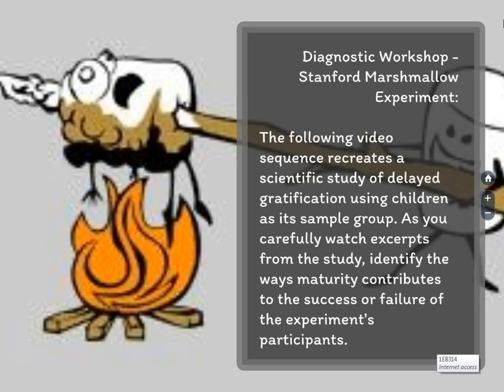Let's take a look at an illustration of that — and probably the best is the Stanford Marshmallow Experiment. In this landmark study, which had over 600 participants, maturity and emotional responses to stress were carefully measured. As you watch excerpts from this study, I'd like you to identify ways maturity can contribute to the success or failure of the experiment's participants.